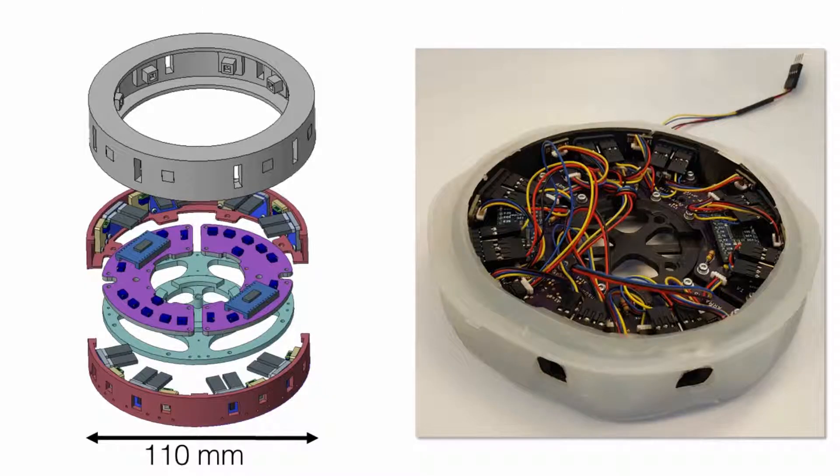Shown here is the prototype of the sensing disk unit on the right and the exploded view of the design on the left. The sensor design integrates eight time-of-flight sensors and eight magnetic field sensors assembled in a radial pattern onto two half disks and mounted onto a core disk.